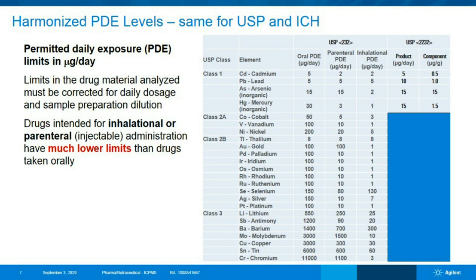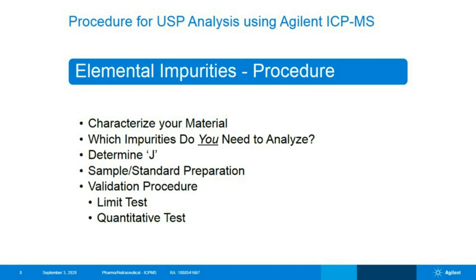For successful analysis, there are some planning steps that need to be taken. First of all, what type of material is going to be analyzed? This will largely determine the best way for sample preparation prior to ICP-MS analysis. Sample preparation is the most important aspect, hence the choice of a suitable dissolution or digestion procedure is paramount. Second, which impurities need to be analyzed? Not all impurity classes need to be analyzed in every product. Third, determine the J-value. The J-value is a very helpful construct that combines daily drug dose, the respective PDE limits, and sample preparation metrics such as the final dilution volume into one single convenient number. Based on those J-values, we can prepare standards, calibration solutions, and reference materials, as well as spike our samples. Usually, we need to perform a validation of the entire procedure through defined tests as outlined in Chapter 233.